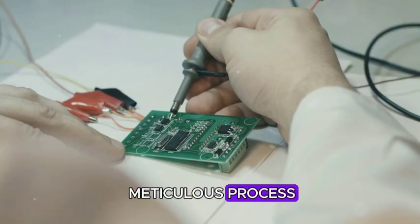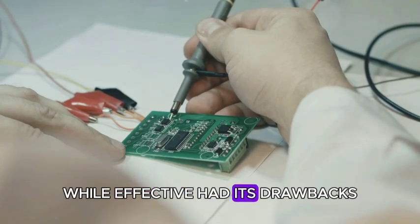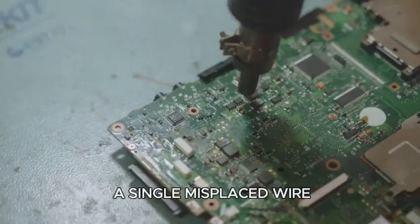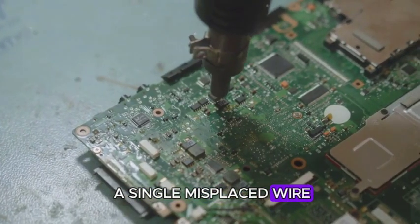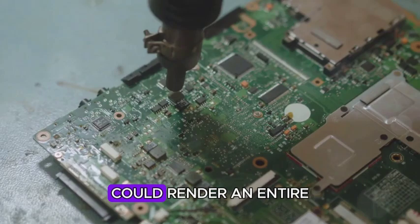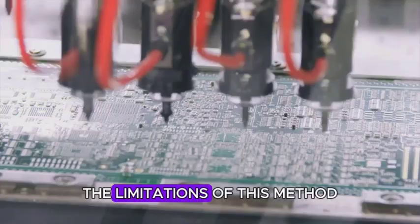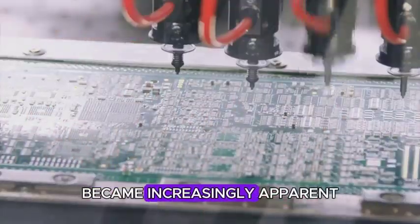This meticulous process, while effective, had its drawbacks. Point-to-point wiring was time-consuming and prone to errors. A single misplaced wire or a poorly soldered joint could render an entire circuit inoperable. As circuits became more complex, the limitations of this method became increasingly apparent.